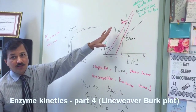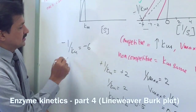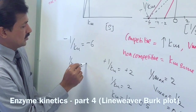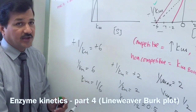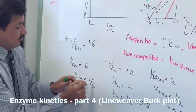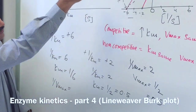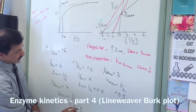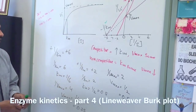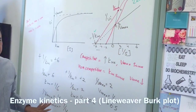For the non-competitive inhibitor: minus 1 over Km equals minus 6, so 1 over Km equals 6 (negatives cancel), and Km equals 1/6, which is approximately 0.167. For the Vmax: 1 over Vmax equals 4, so Vmax equals 1/4 equals 0.25. Like this, you can calculate Km and Vmax by looking at the Lineweaver-Burk plot — simply remember that all the intercept values are reciprocals and you need to simplify them.